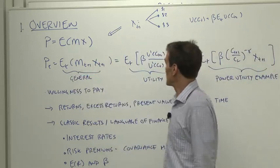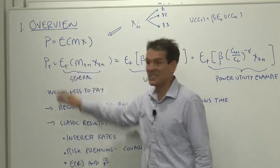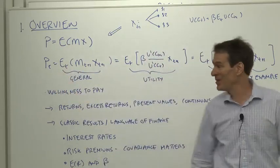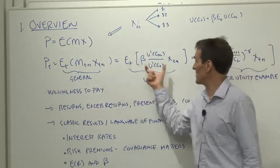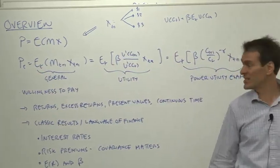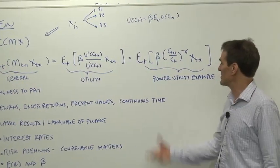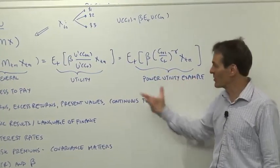That's the general version. As a warning, I sometimes leave the t's off when you're supposed to know where they go. We looked at that in terms of utility functions, so the discount factor was this ratio of marginal utilities. We used an example power utility, which we'll keep using throughout.